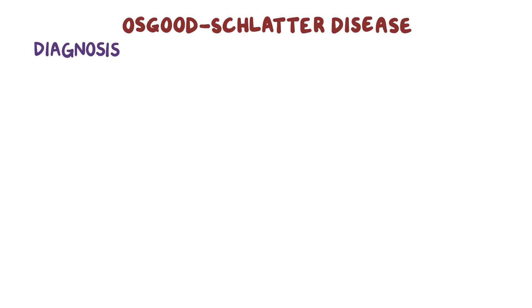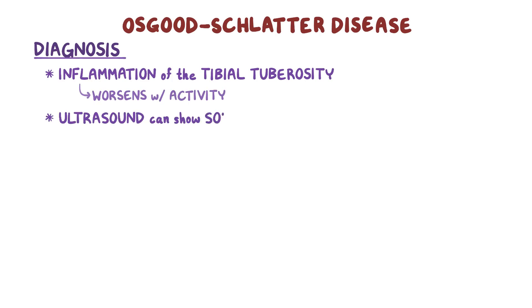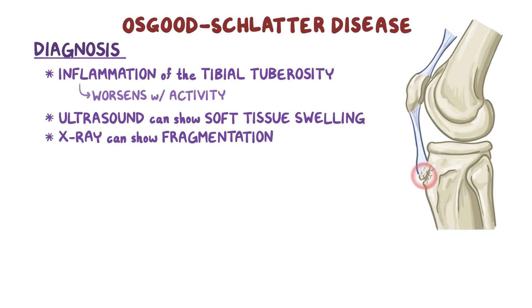The diagnosis of Osgood-Schlatter disease is mainly based on inflammation of the tibial tuberosity, which worsens with activity. In addition, an ultrasound can show soft tissue swelling around the tuberosity, and an x-ray might show fragmentation of the tibial tuberosity in severe cases.